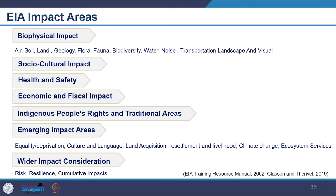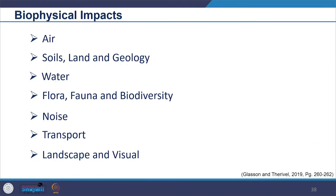In part one we are going to look at the biophysical impact areas. Under biophysical impact we look at air, soil, land and geology, water, flora, fauna and biodiversity, noise, transport and landscape, and visuals. Each one of them will be covered in detail in the method section as well — right now it is only to give an overview of what all impacts are considered.